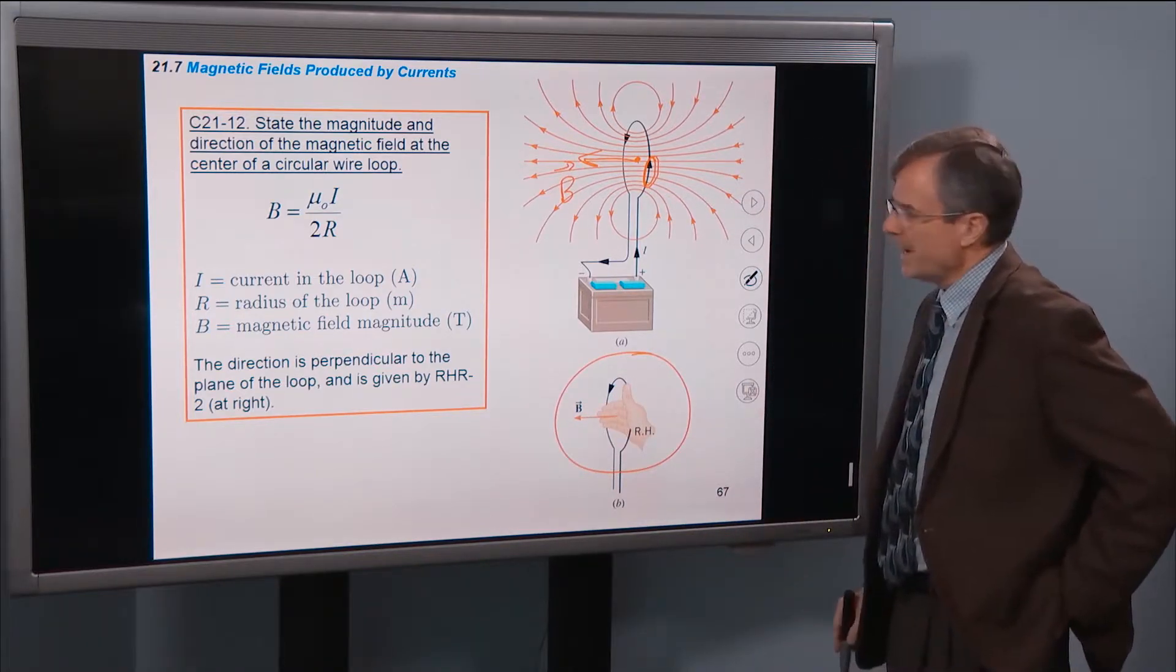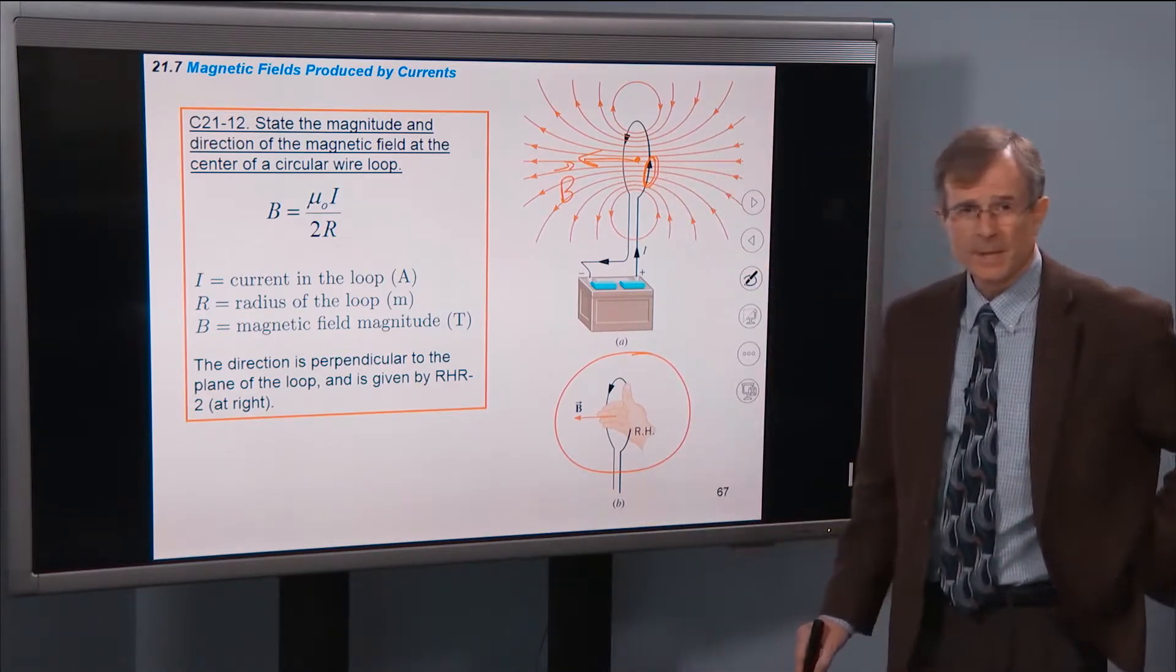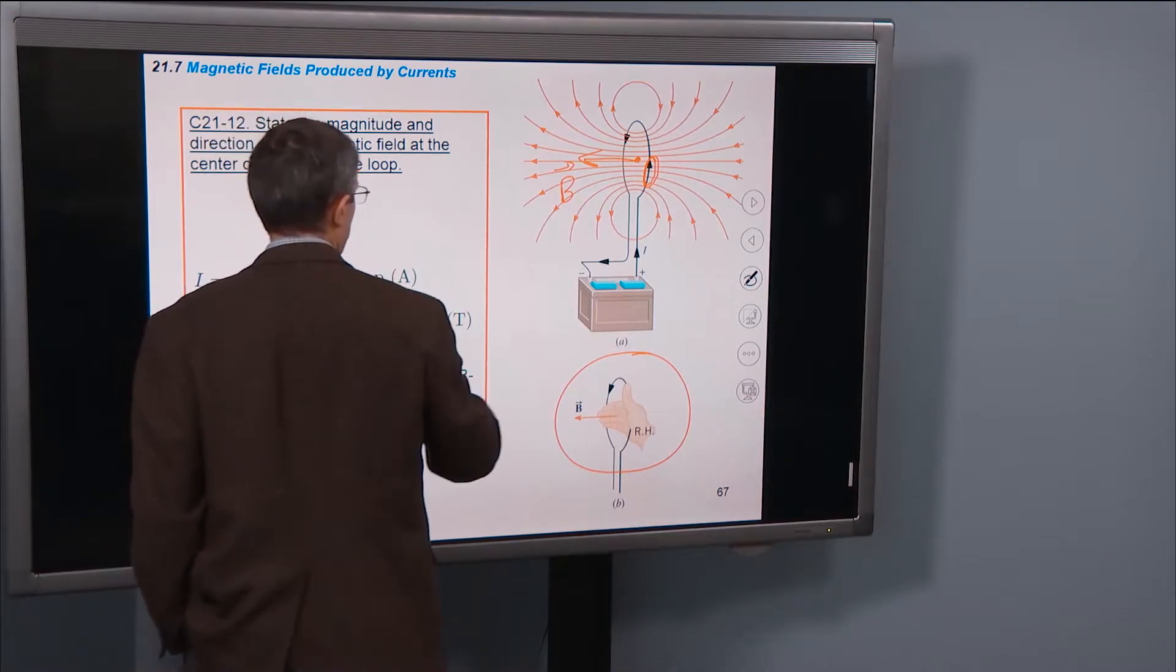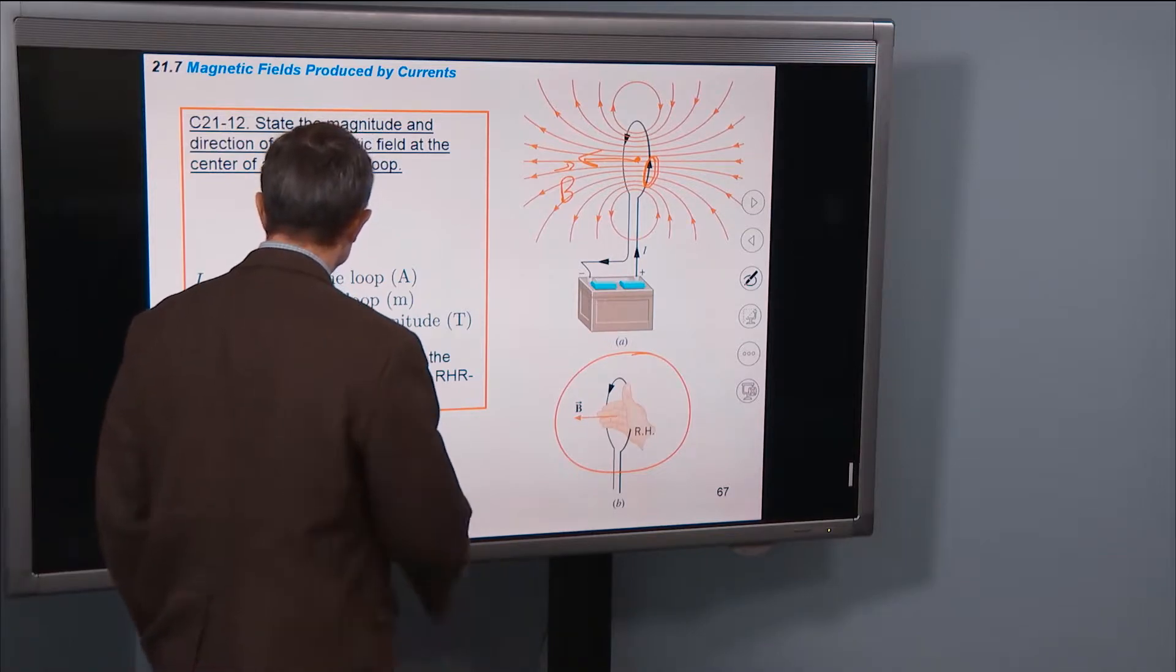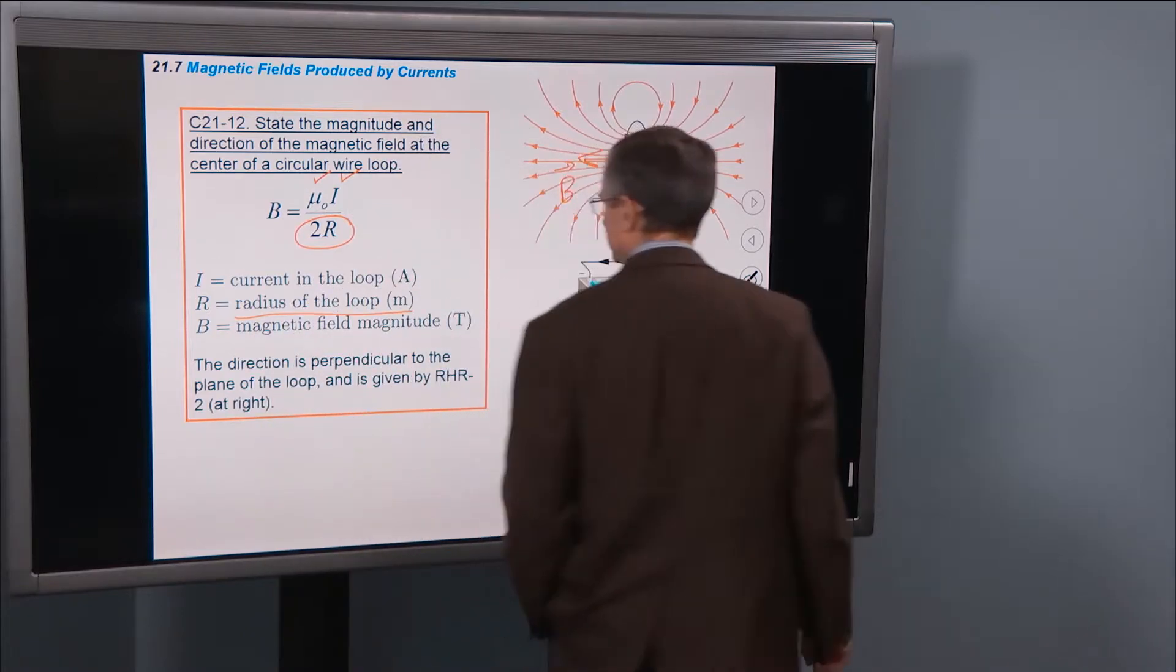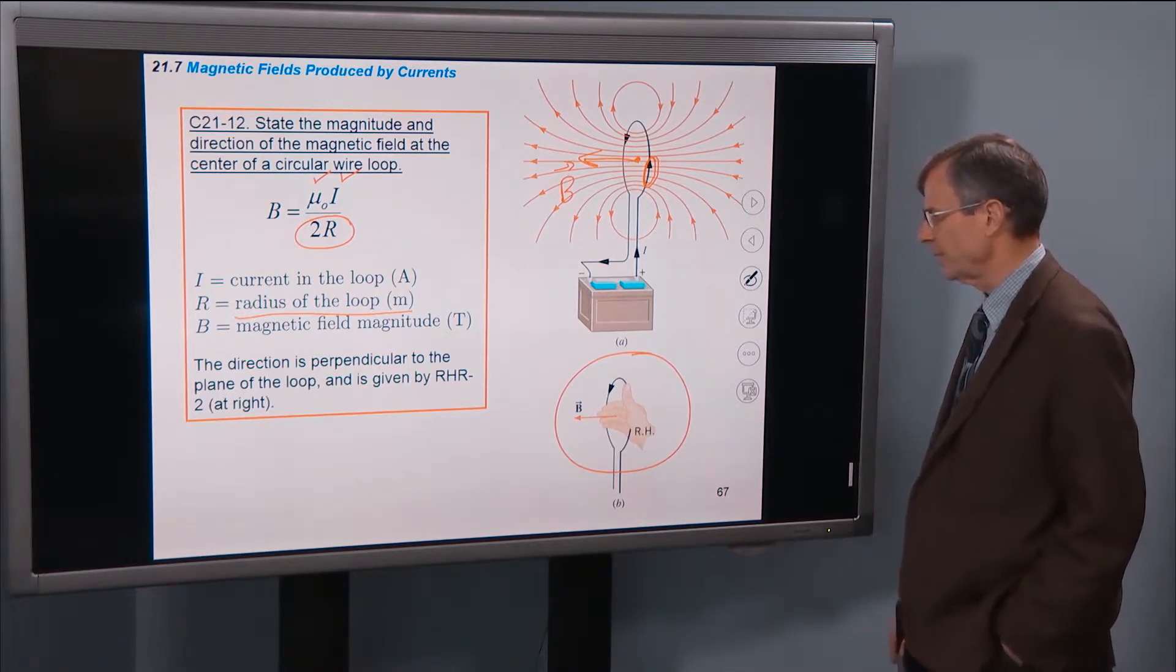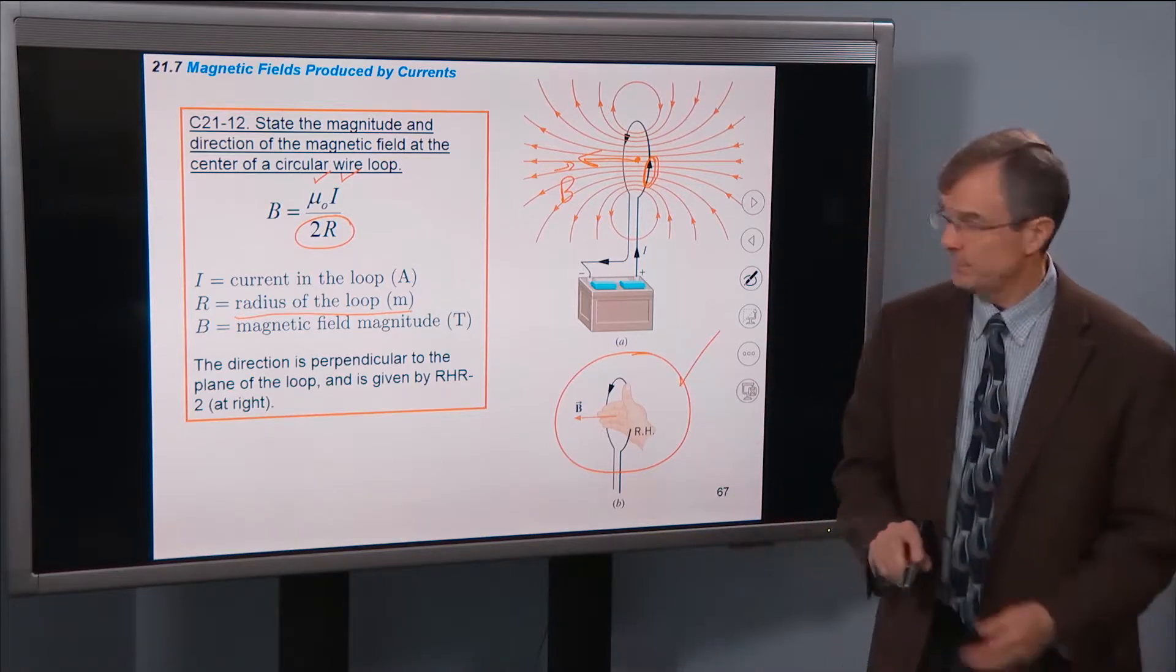But what's the magnitude of the magnetic field? You might expect it to be similar in some ways to the magnetic field due to a long straight wire. And in fact it is. It has a µ₀ in it. It has the current in that loop. But now it's divided by twice the radius of the loop. And it's very similar to the result that we had before. And the direction is perpendicular to the plane of the loop, and it's given by right-hand rule number 2, as shown right here. µ₀i over 2r.